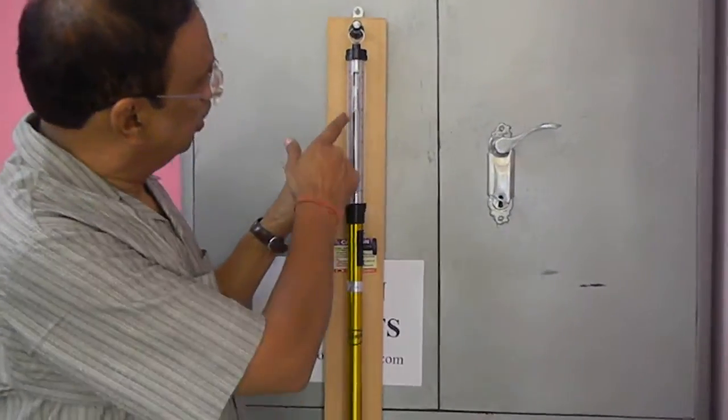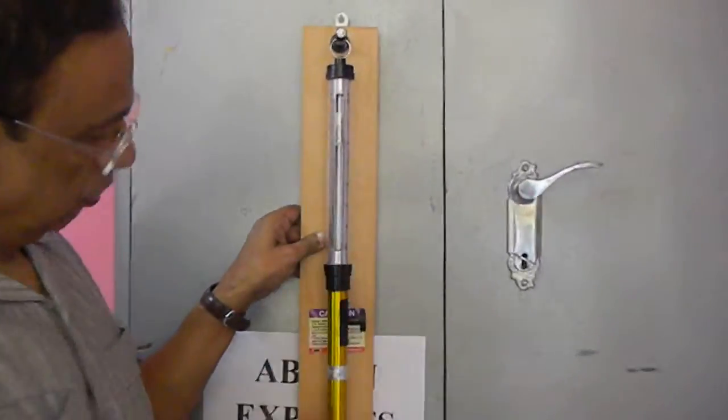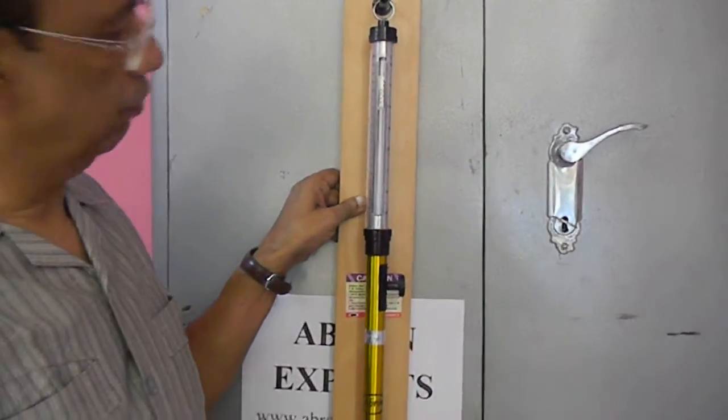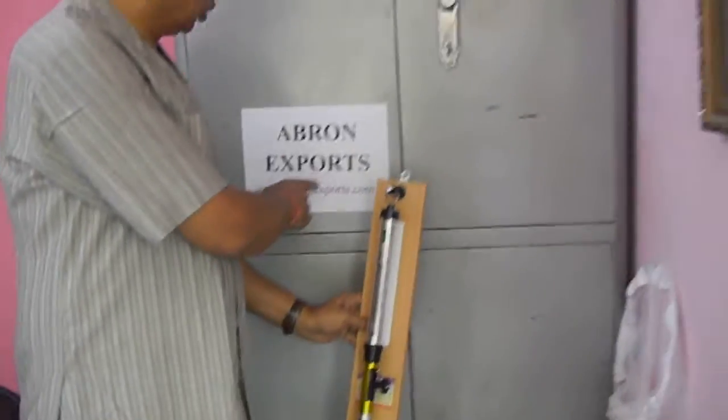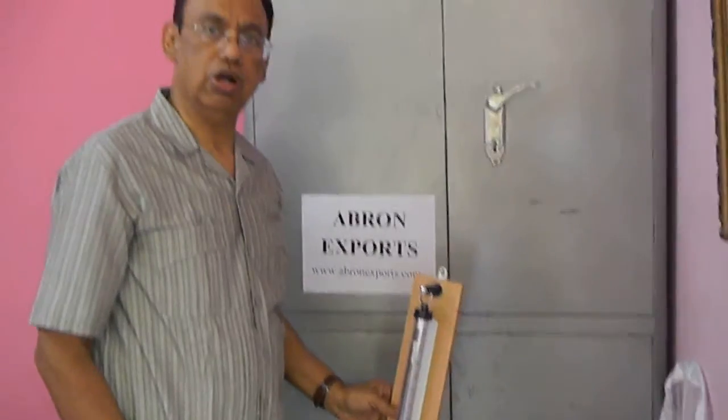Now, the mercury is ready. It is at 76. With atmospheric pressure, it can work. Thank you very much. Visit abronexports.com.